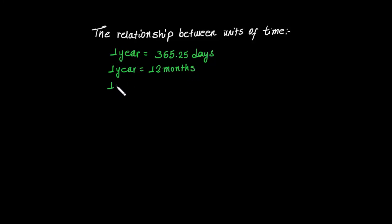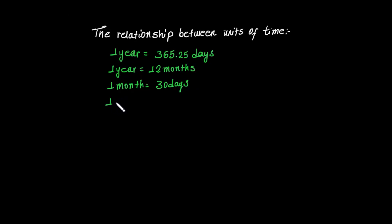One month has 30 days. One week is equal to 7 days.